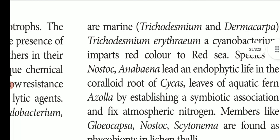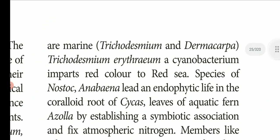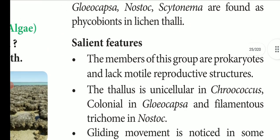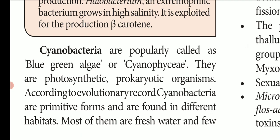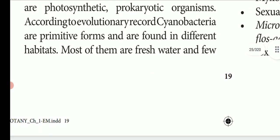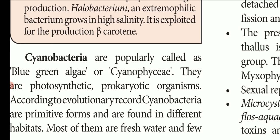Cyanobacteria is called blue-green algae. They are photosynthetic — they can prepare their own food. They are prokaryotic organisms. They do not have a well-developed nuclear membrane or membrane-bound organelles such as ribosomes, lysosomes, mitochondria, and Golgi bodies.